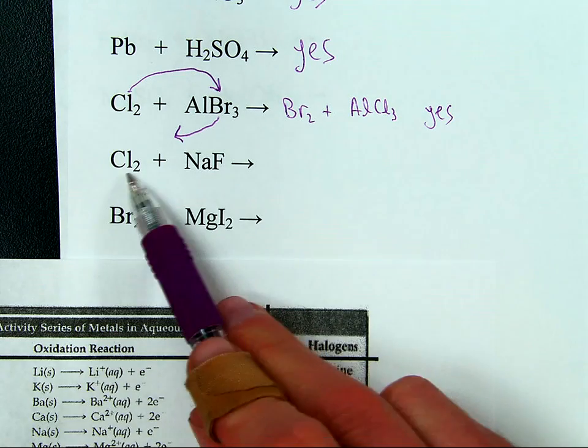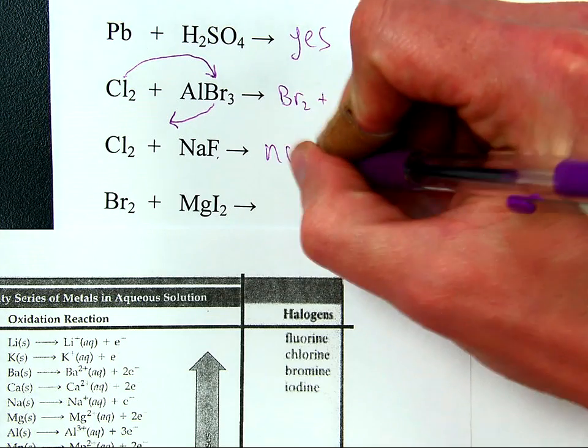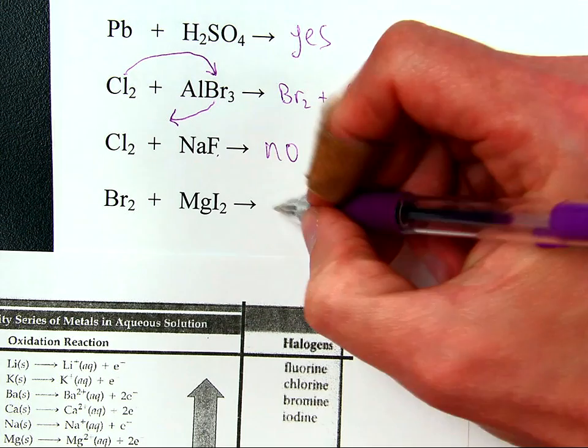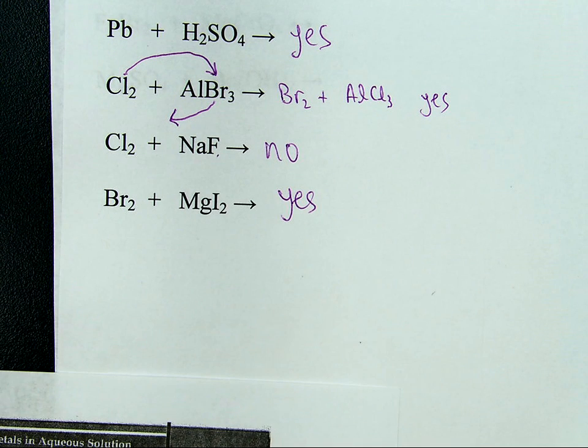Is chlorine above fluorine? No, it is not. This reaction won't happen. Is bromine above iodine? Yes it is. This reaction will happen. That's it.